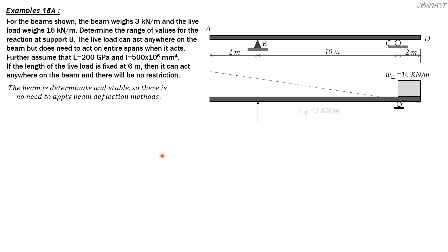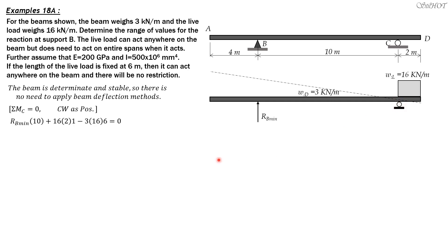Now analyze the beam. Summing moments about support C equals zero, clockwise positive: Rb_minimum times 10, plus 16 times 2 times 1, minus 3 times 16 times 6 equals zero. Solving, Rb_minimum equals 25.6 kN.